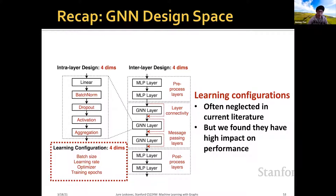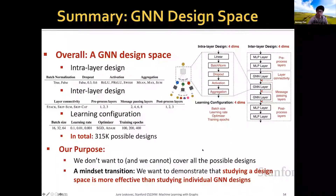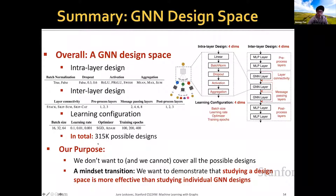Specifically, we consider the batch size, the learning rate, the optimizer for gradient update, and how many epochs we train our models. In summary, we have proposed a general GNN design space consisting of intralayer design, interlayer design, and learning configuration. Considering all possible combinations, this leads to a huge space containing 315,000 possible GNN designs.